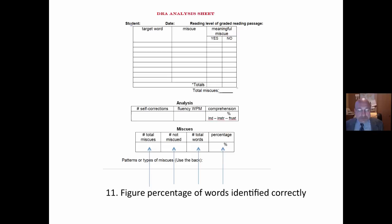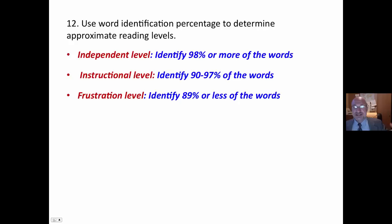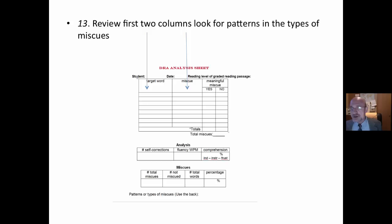Finally, I figured out percentage of words. Total miscued. Not miscued. Total words. And then I find my percentage. That gives me a word identification score. Of which I can use then to determine if that's at the independent, instructional, or frustration level. Keep it simple.